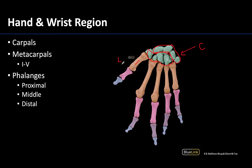The first digit in the hand is lateral, which is the opposite of what occurs in the foot where the first digit is medial. I always remember: the first digit in the hand is associated with the thumb, the first digit in the foot is associated with the big or great toe, and then you can count from there. So this would be the first metacarpal, second, third, fourth, and the fifth will be the medial-most.